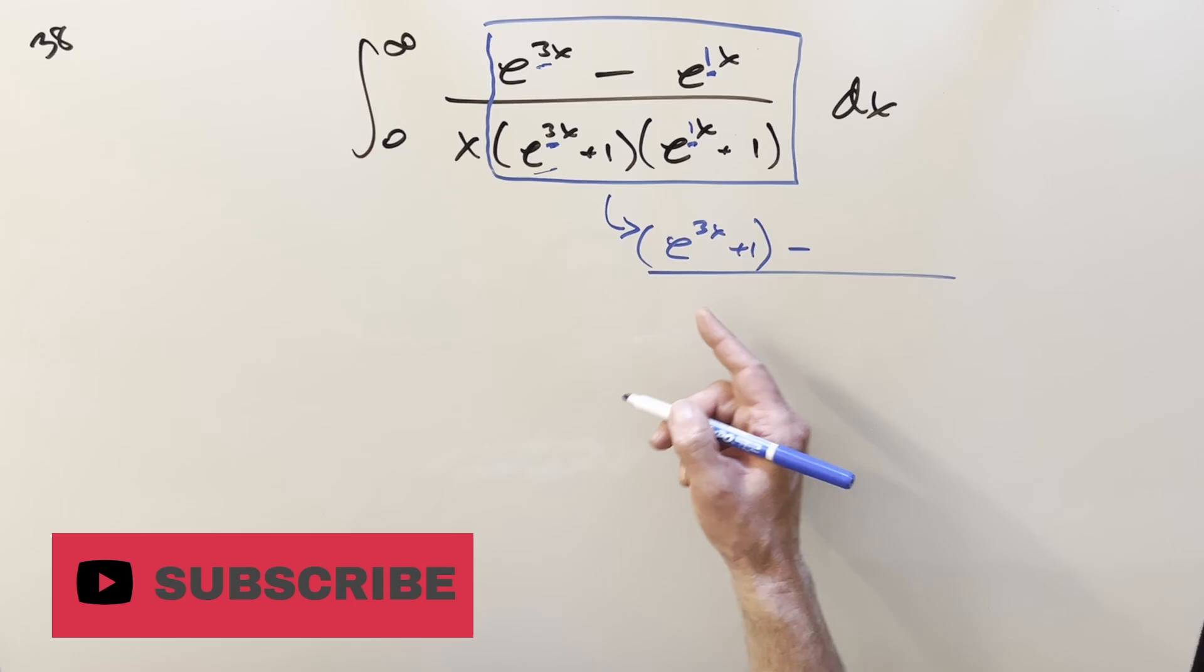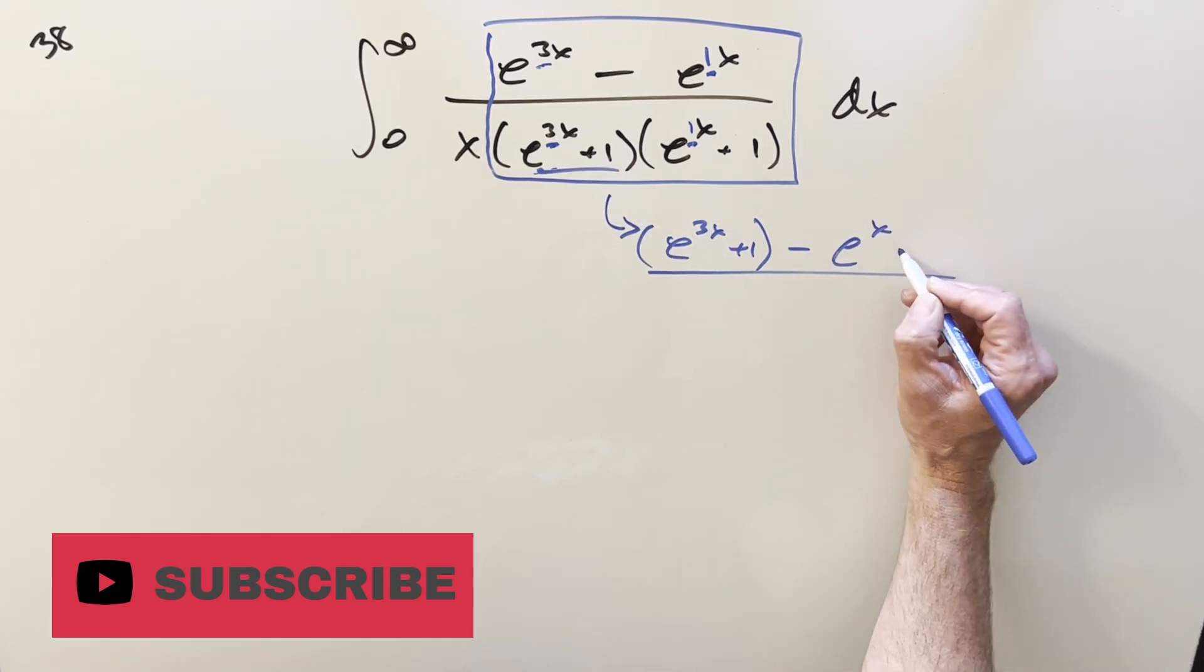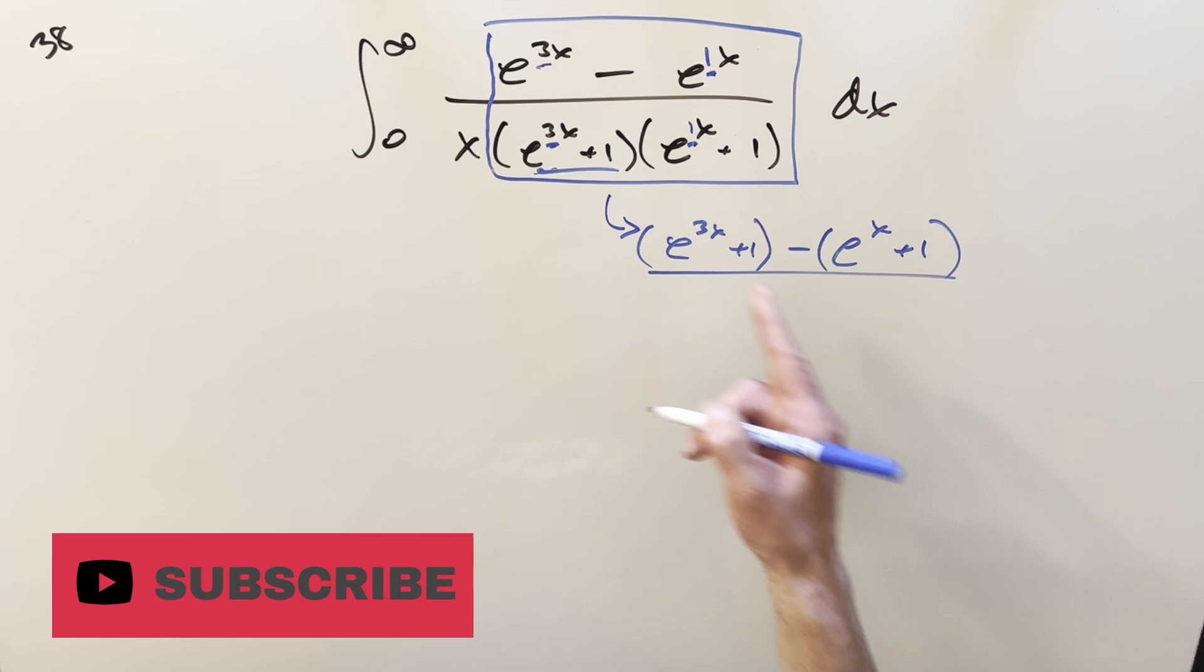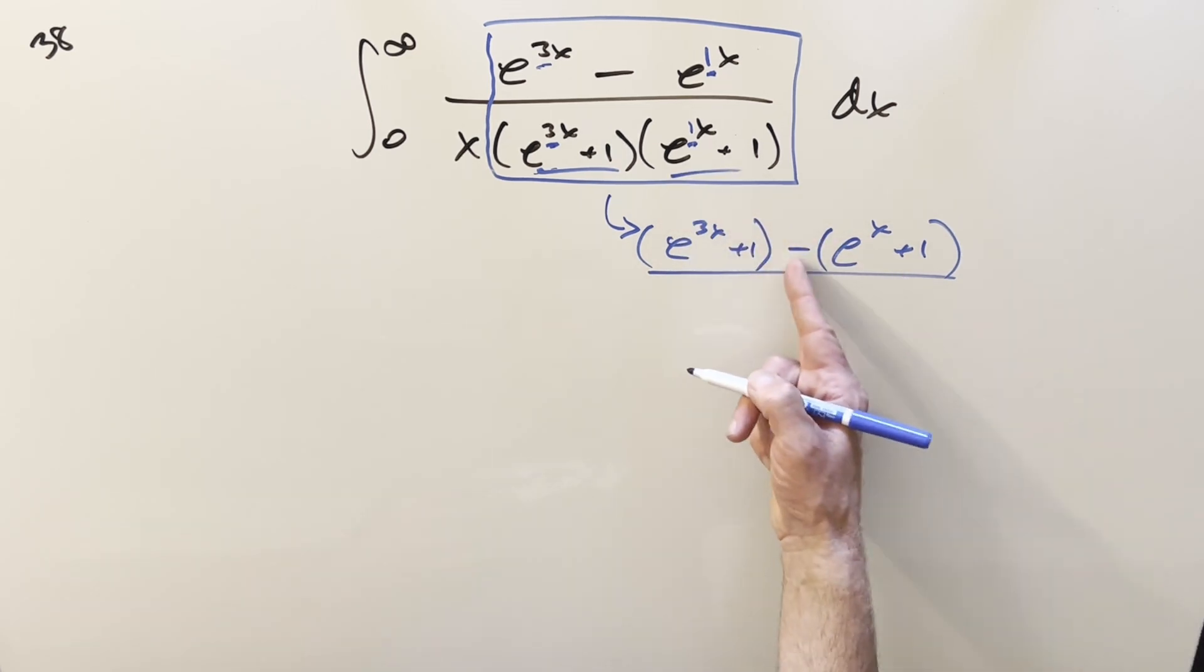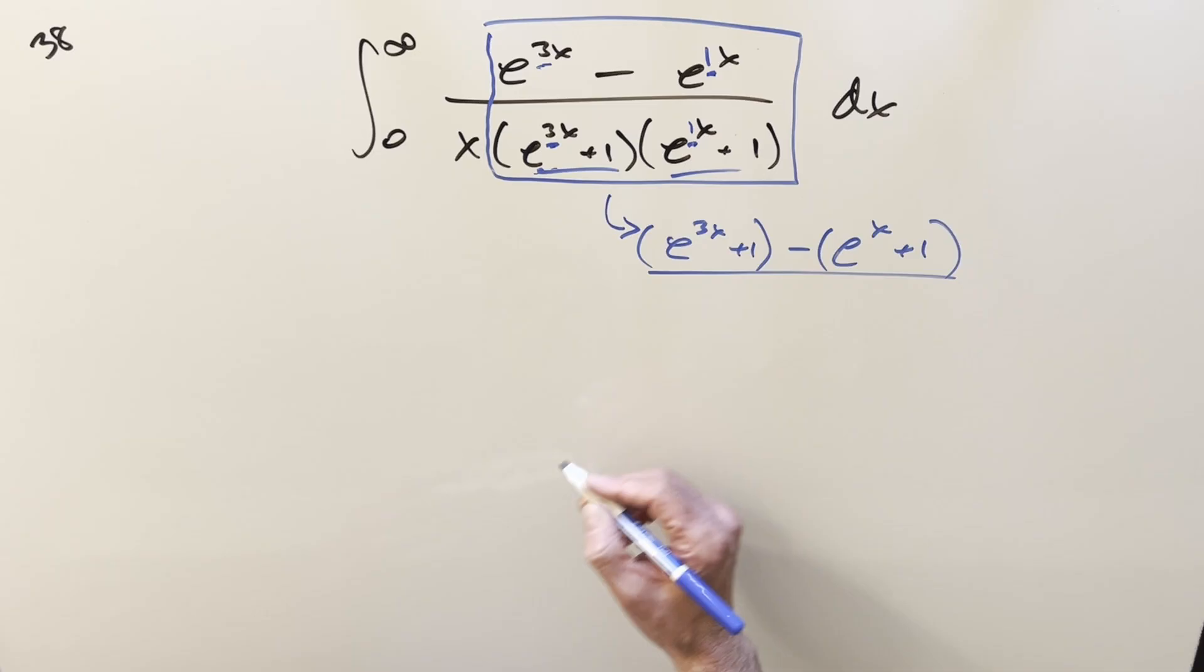So I'm going to create this e to the 3x plus 1, which is the same as this, and then create an e to the x plus 1, which is going to be the same as this. Just notice when you subtract that out, the ones cancel, and it's the same as our numerator.